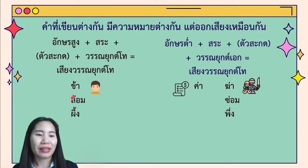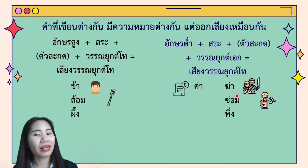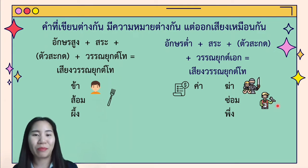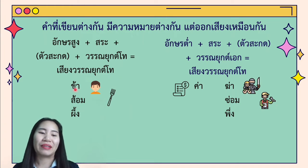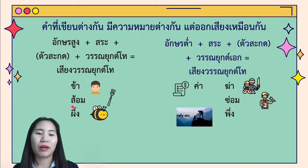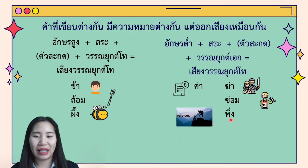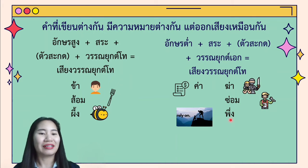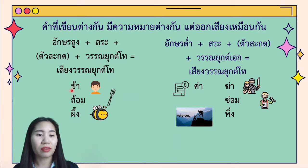Now let's see more examples. The second one is the word ส้อม. ส้อม means 'fork.' And another ส้อม from the low class consonant means 'to fix' or 'to repair,' like ซ่อมแฟน, ซ่อมทีวี. The last example is the word ผึ้ง. ผึ้ง with high class and tone mark 2 means 'bee.' However, พึ่ง from the low class consonant means 'to rely on.' Both got the same tone — different consonant, different meaning, but pronounced the same.